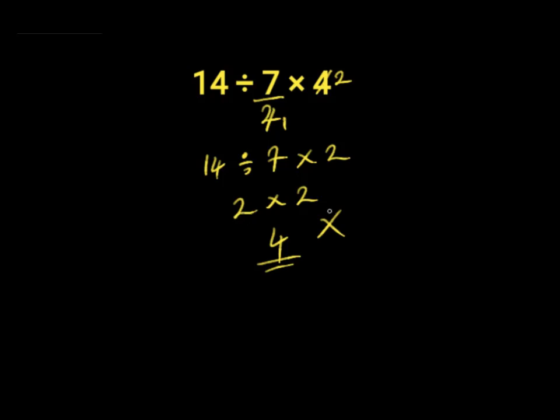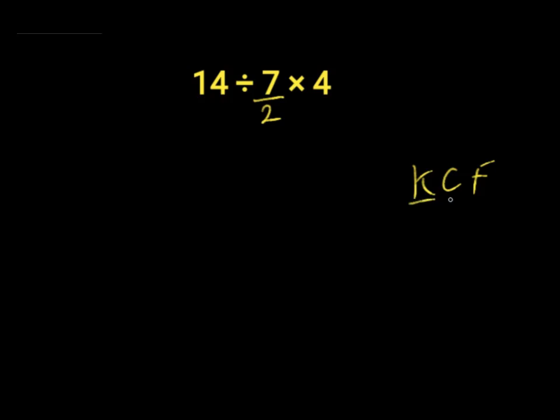Let us solve the right answer to this question. First, we solve 14 divided by 7 over 2 using KCF. K stands for keep, C stands for change, and F stands for flip. We keep 14, change division to multiplication, and flip 7 over 2 to 2 over 7.